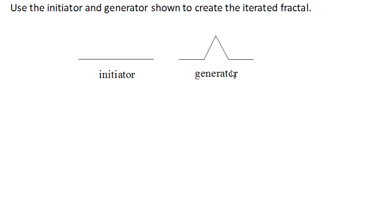So in step zero, at the very beginning, we start out with just a line. In step one, we take that line segment and we replace it with a copy of the generator.